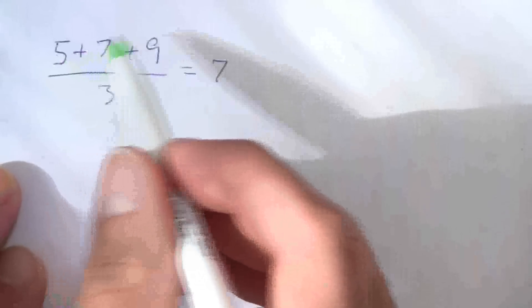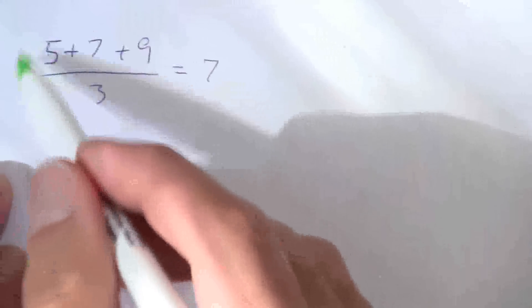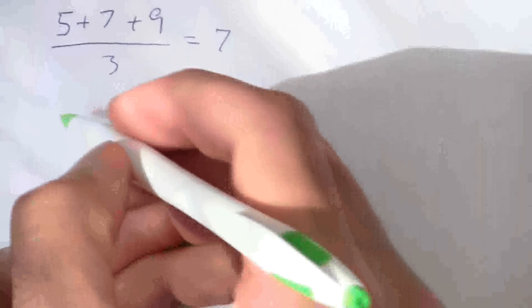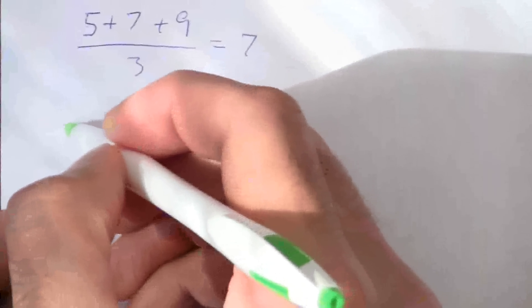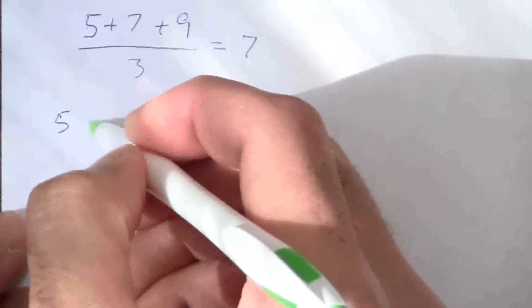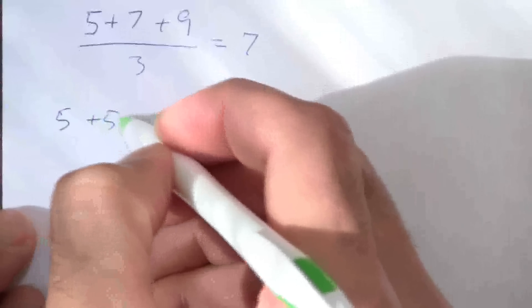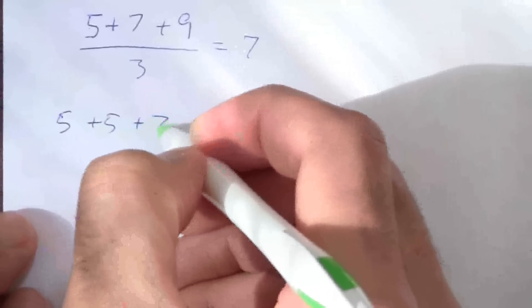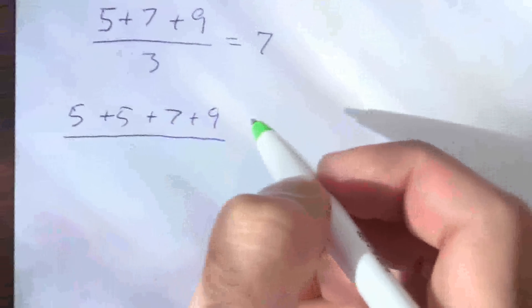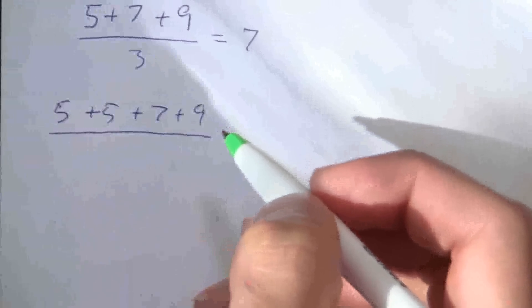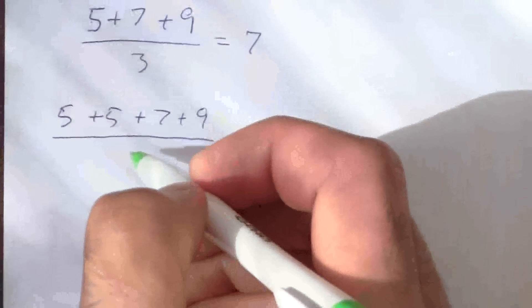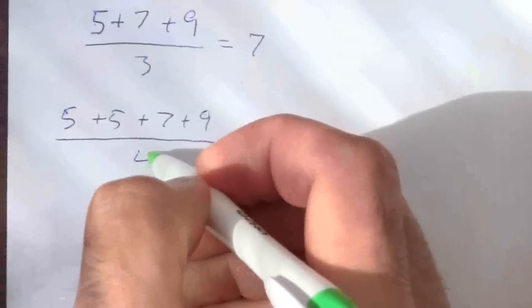But what if I have more fives than I have of 7 and 9? Let's say I have 5 and 5 and 7 and 9. If I wanted to average those I would add them up and this time I'm going to divide by 4.